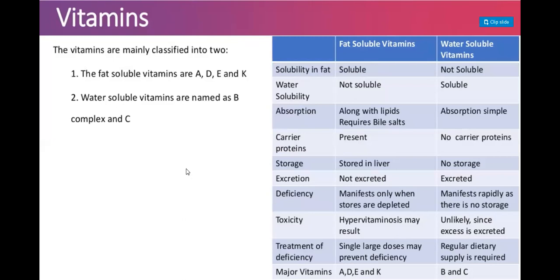Regarding storage, fat-soluble vitamins are stored in the liver, but water-soluble vitamins are not stored — they are produced when required and otherwise excreted out from the body. Regarding excretion, water-soluble vitamins are excreted if there is no requirement. Regarding deficiency, fat-soluble vitamin deficiencies manifest only when stores are depleted, whereas water-soluble vitamin deficiencies manifest rapidly as there is no storage.